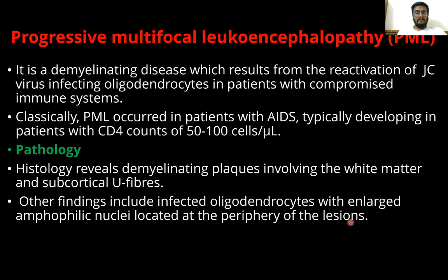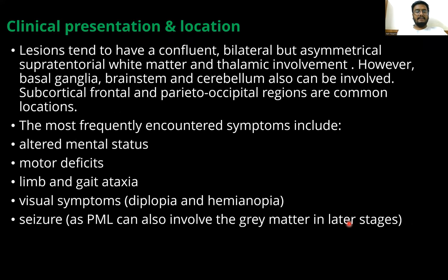Other histologic findings include infected oligodendrocytes with enlarged amphophilic nuclei located at the periphery of the lesion. Clinically, lesions tend to be bilateral but asymmetrical, involving supratentorial white matter and the thalamus. The basal ganglia, brainstem, and cerebellum can also be involved. Subcortical, frontal, and parieto-occipital regions are common locations. The most frequently encountered symptoms include altered mental status, motor deficits, limb and gait ataxia, visual symptoms such as diplopia and hemianopia, and seizures. PML involves the grey matter in the later stages.